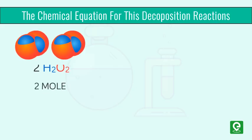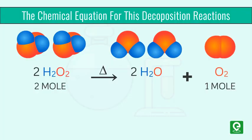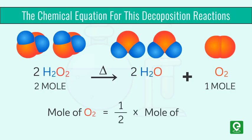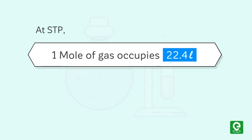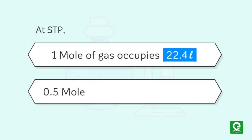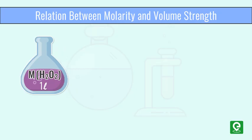The chemical equation for this decomposition reaction shows that two moles of H₂O₂ on decomposition gives one mole of O₂ — in other words, the moles of O₂ formed is half the moles of H₂O₂ decomposed. If we take one mole of H₂O₂ solution and decompose it completely, it will release 0.5 mole of O₂. At STP, one mole of any gas occupies 22.4 liters, so 0.5 mole of O₂ will occupy 11.2 liters.